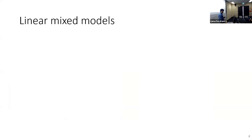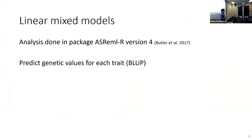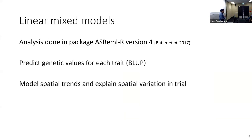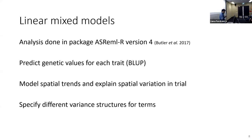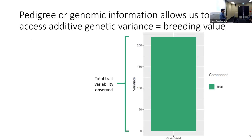To analyze this, I use linear mixed models — AS-REML version 4 in R. With these models, I can predict genetic values for each trait using Best Linear Unbiased Prediction (BLUP). I can also model spatial trends in field trials to explain more variability, and I can specify different variance structures for different terms. Importantly, I can include correlated information by doing multivariate analysis and incorporate relationship information from relatives. Relative information could be pedigree or genomic; I only have access to pedigree for now.